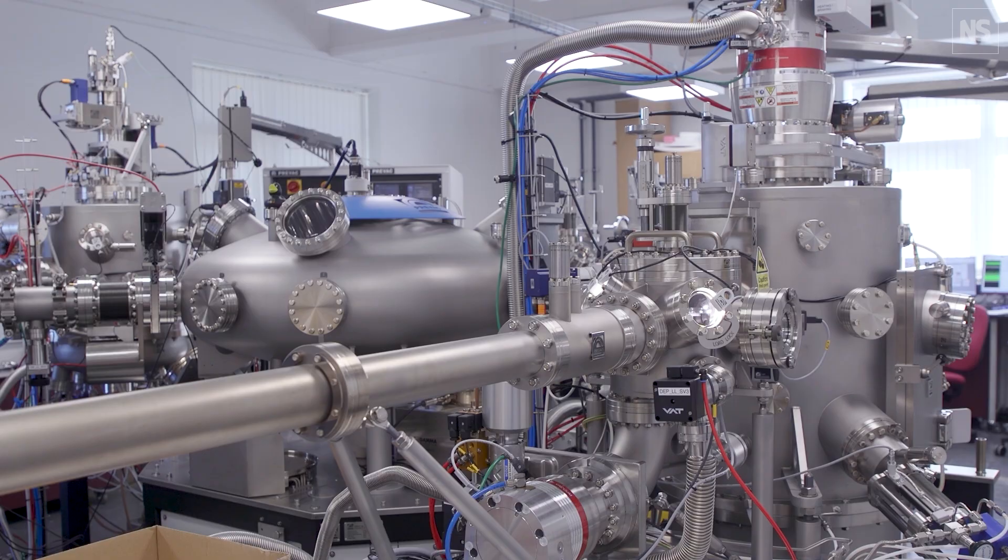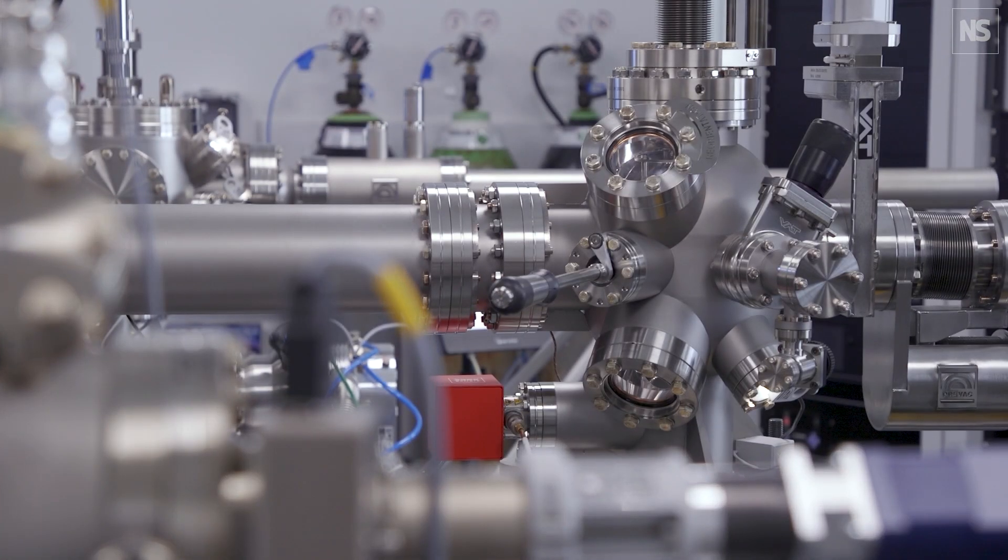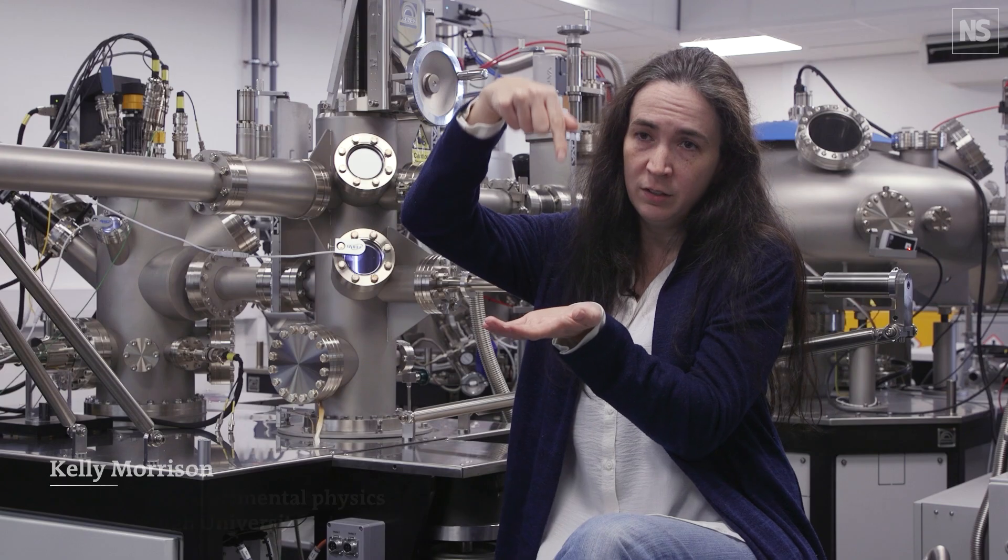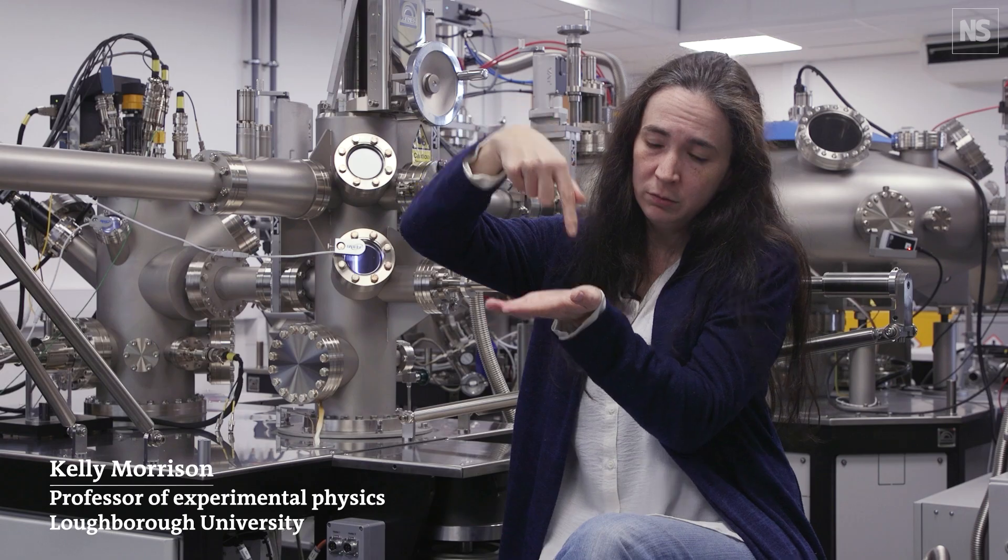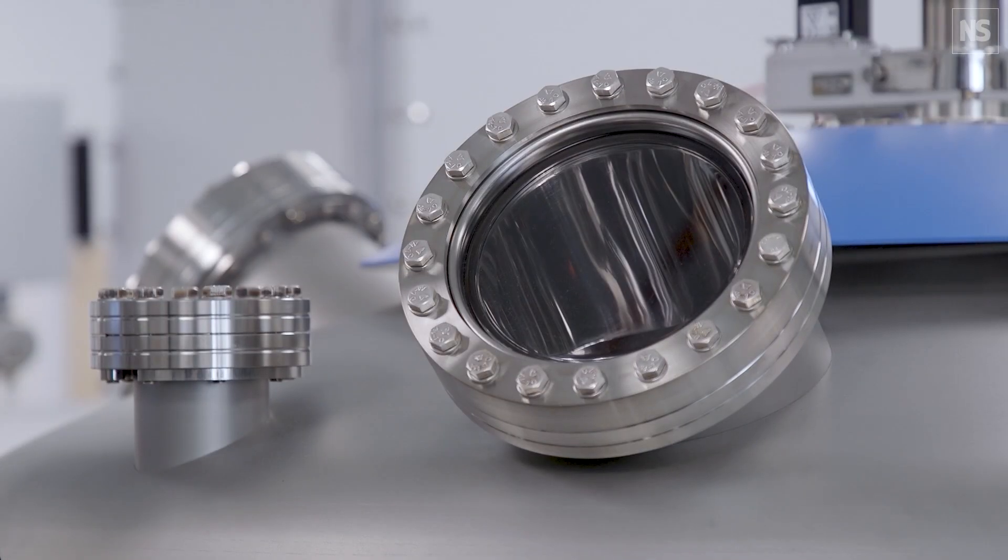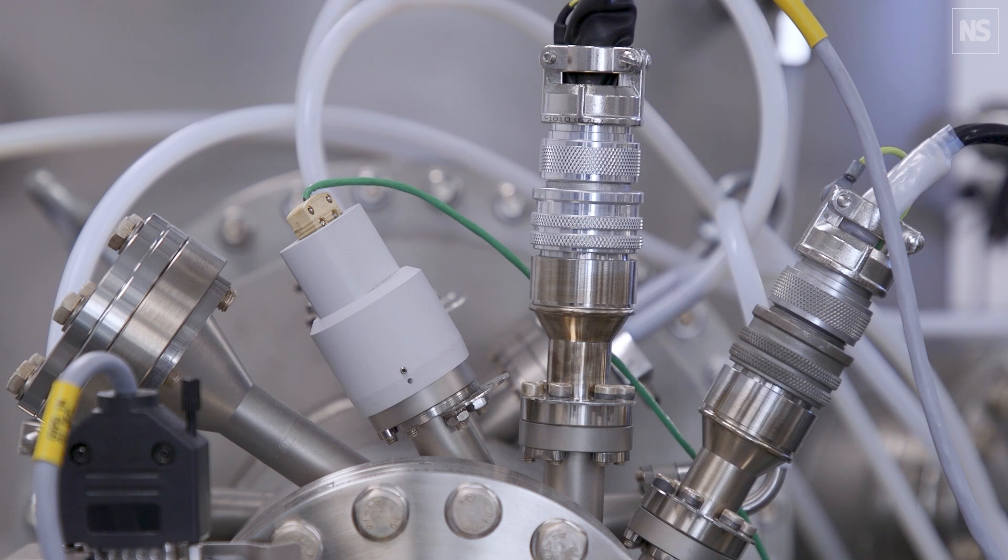The nanofraser is what we call a thermal scanning probe microscope. It's like a very small needle that can see atomic interactions. We take that needle and we heat it up. It can burn away material.